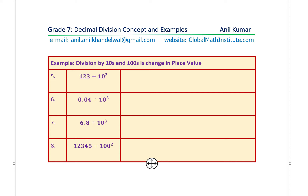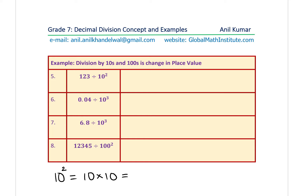Now we're doing the same thing, but 100 is written as 10 squared. Remember, 10 squared means 10 times 10. When multiplying by tens, zeros get added at the end. Similarly, 10 cubed means three zeros. A question for you: what does 100 squared equal? By the time we reach question 8, you should have your answer ready.